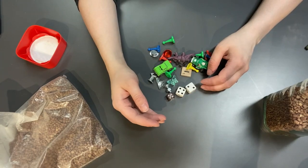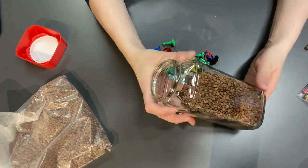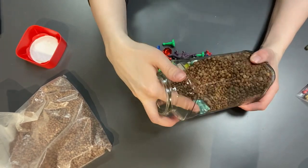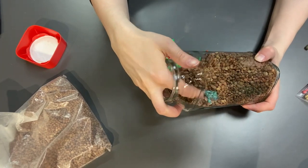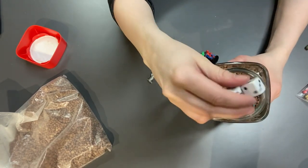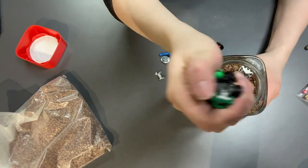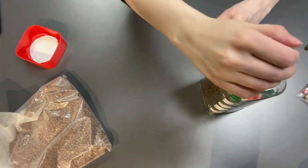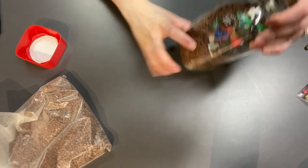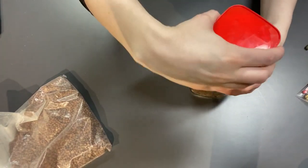So once you have your little toys and you have your jar that is mostly filled with your grains or lentils, just put all of these toys inside. And this is why you want to make sure you don't fill it too full. Put the lid on.